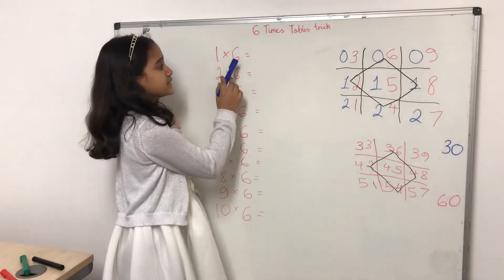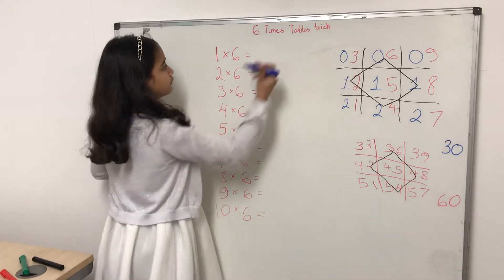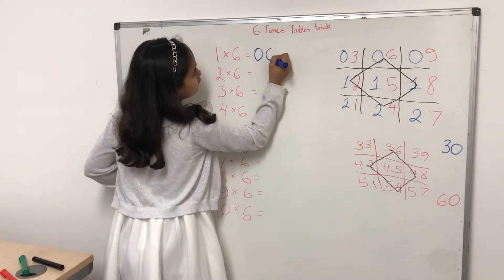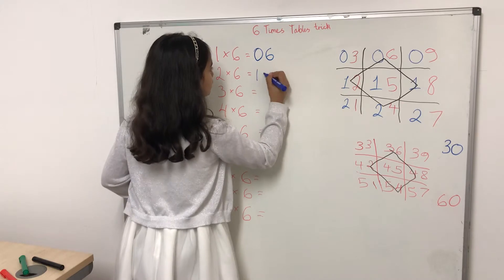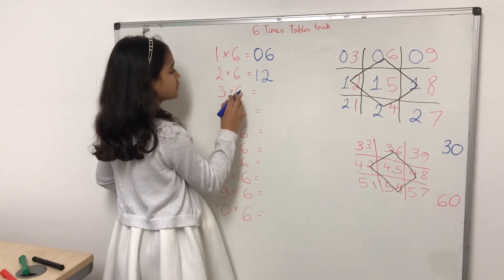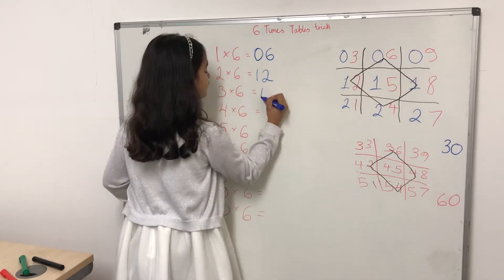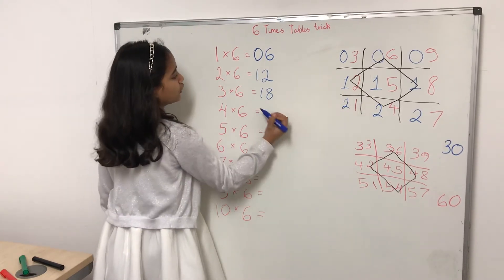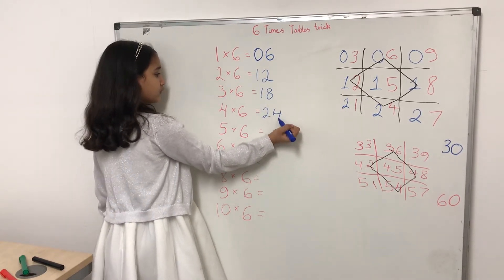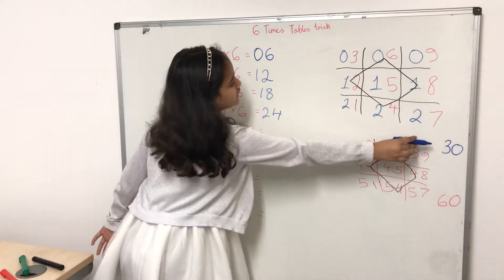One times six equals six. Two times six equals twelve. Three times six equals eighteen. Four times six equals twenty-four. Five times six equals thirty.